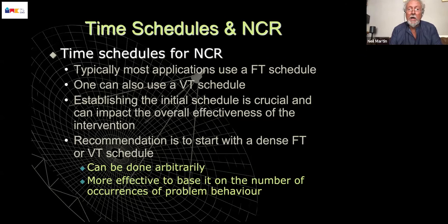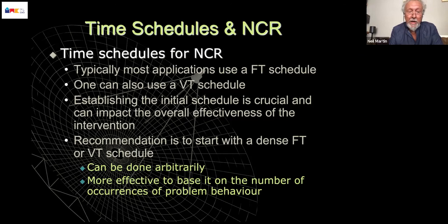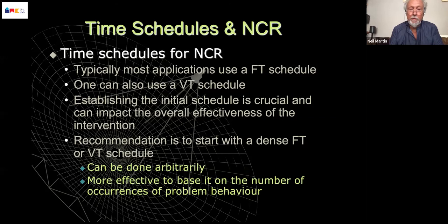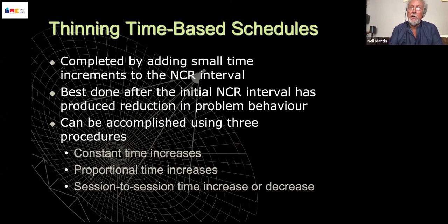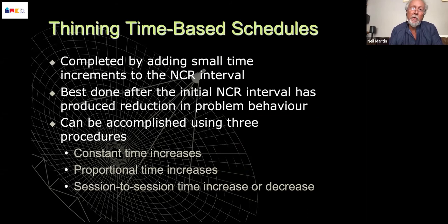How you establish the initial schedule is important. An easy arbitrary thing to do is just make it very dense and very frequent at the beginning. But a more empirical way would be to calculate the rate of access to reinforcement in baseline — that is, the number of times problem behaviour actually contacts reinforcement — and use that as your starting point, but obviously set it as much more dense and much more frequent. But then you need to thin the schedules, because you can't realistically provide attention or a break to individuals every 10 seconds for a long period of time. So you need a predetermined plan for how you would thin the schedules.